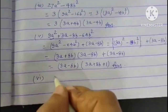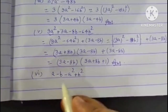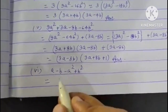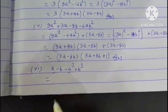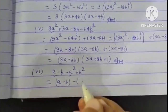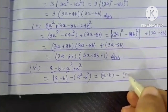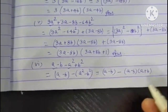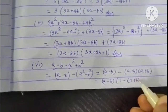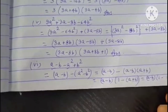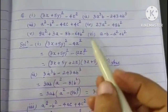Sixth question: a - b - a² + b². Grouping: (a - b) - (a² - b²) = (a - b) - (a - b)(a + b). Taking (a - b) common: (a - b)(1 - (a + b)) = (a - b)(1 - a - b). This is our answer. We have now solved all six questions.